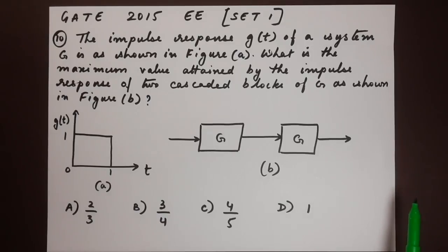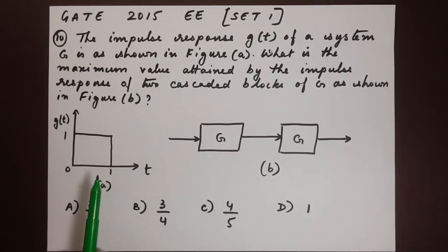So we have to find out the maximum value attained and the system is an impulse system, impulse response. So we have g of t at 1 and 1 here, 1 here at t, at time t.